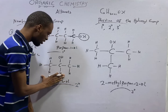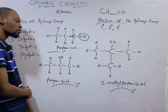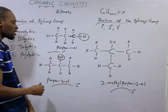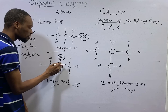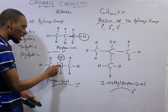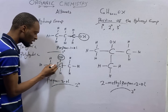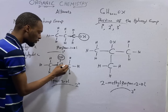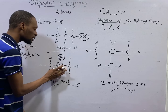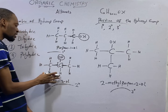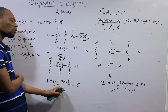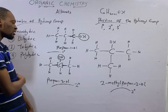Now look at this — this is propan-2-ol or 2-propanol. This is the OH. This is the carbon carrying the OH. How many other carbon atoms are directly linked to the carbon carrying the OH? We have this one here, and we have this one here — directly linked to it. So this is a secondary carbon because it has two other carbons directly linked to it. Therefore, this is a secondary alcohol. Propan-1-ol is a primary alcohol; propan-2-ol or 2-propanol is a secondary alcohol.